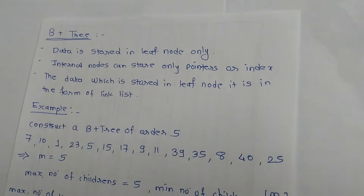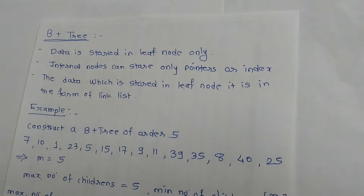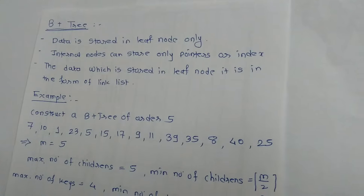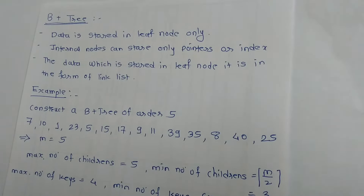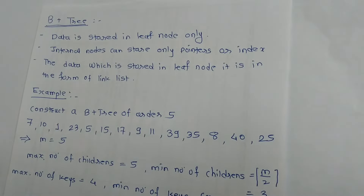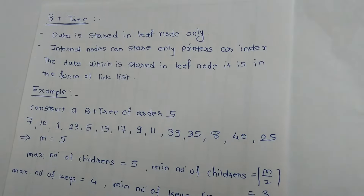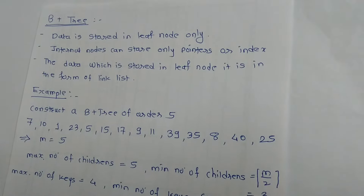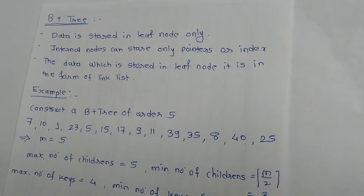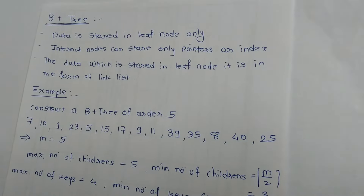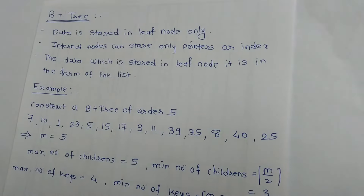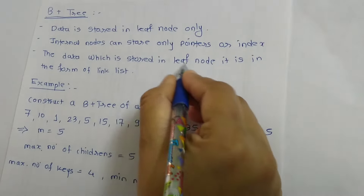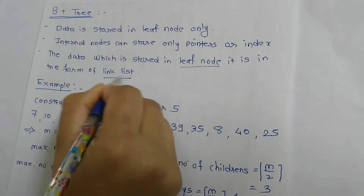Hello everyone. Today's topic is B plus tree. So what is B plus tree? B plus tree is a self-balancing tree. There are some properties: data is stored in leaf nodes only, internal nodes store only pointers or indexes, and the data stored in the leaf nodes follows linked list format.